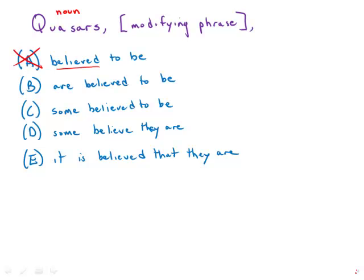With B, we get a bonafide verb, quasars are believed to be. That is perfect noun and verb, so that works. We'll see if we get something better, but that is at least a valid noun verb construction.